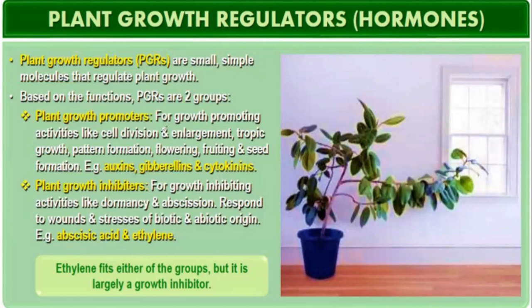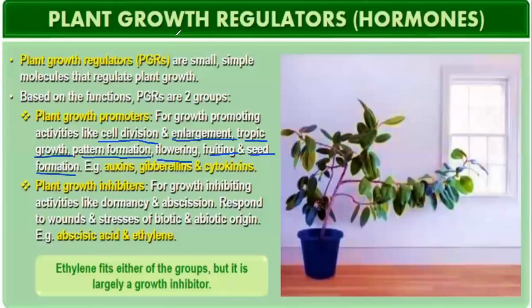General characters: growth promoting activities like cell division and enlargement, tropic growth or tropic movements, pattern formation, flowering, fruiting, and seed formation are induced by certain hormones such as auxin, gibberellin, and cytokinin.